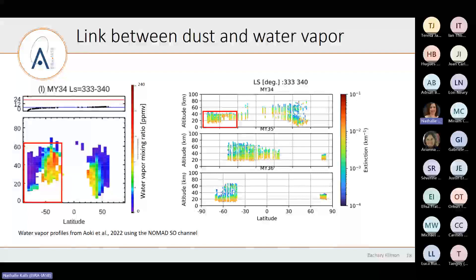So in the region after the global storm, we observe zero opacity — the atmosphere is completely clear. The question is whether the atmosphere is genuinely clear or whether the particles are too small for our sensitivity. If the temperature and storm conditions were present, water vapor could rise and condense into water ice that we would detect. But here we see nothing — the atmosphere is very clear, or the particles are below our detection threshold.